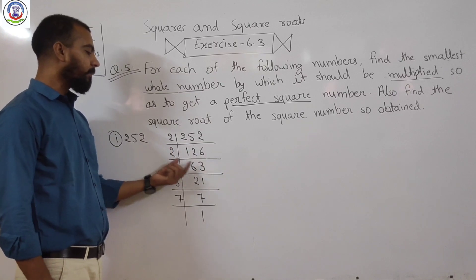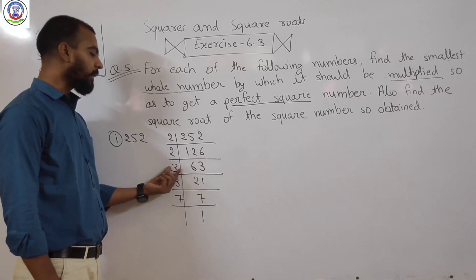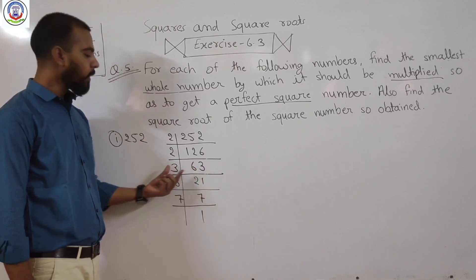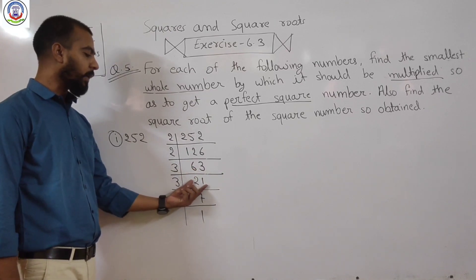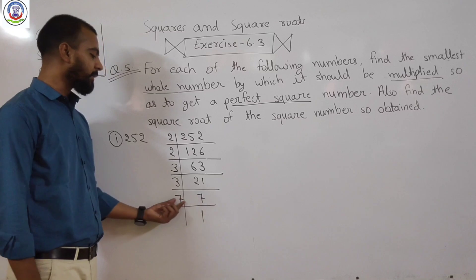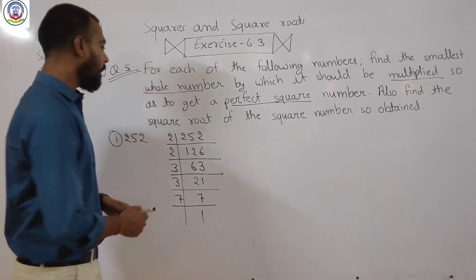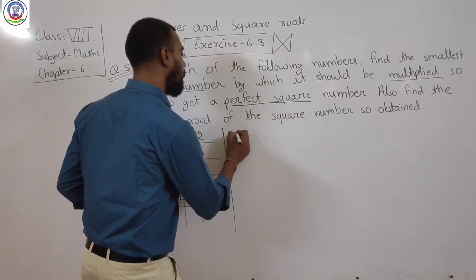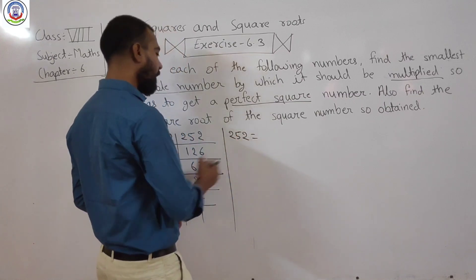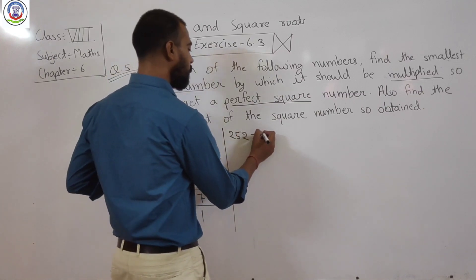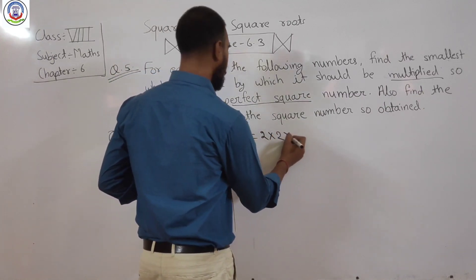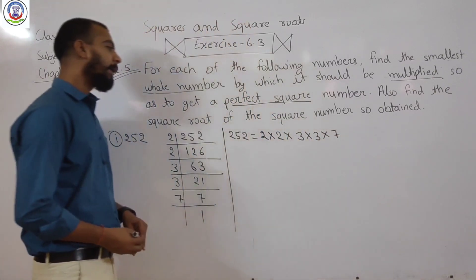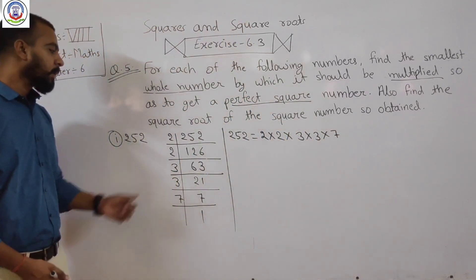So the prime factors of 252 are 2 × 2 × 3 × 3 × 7.